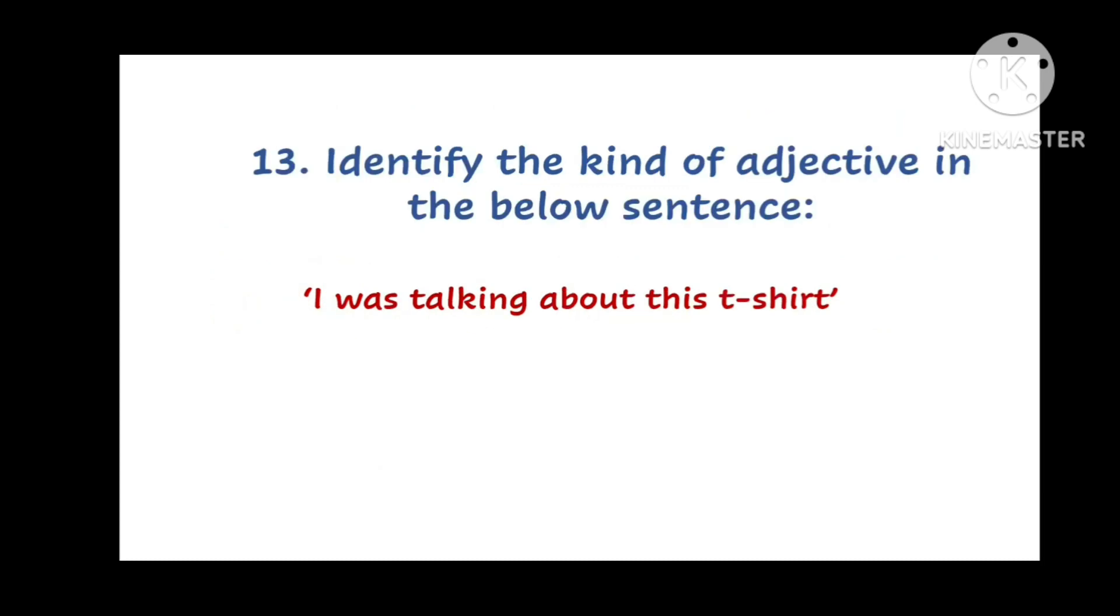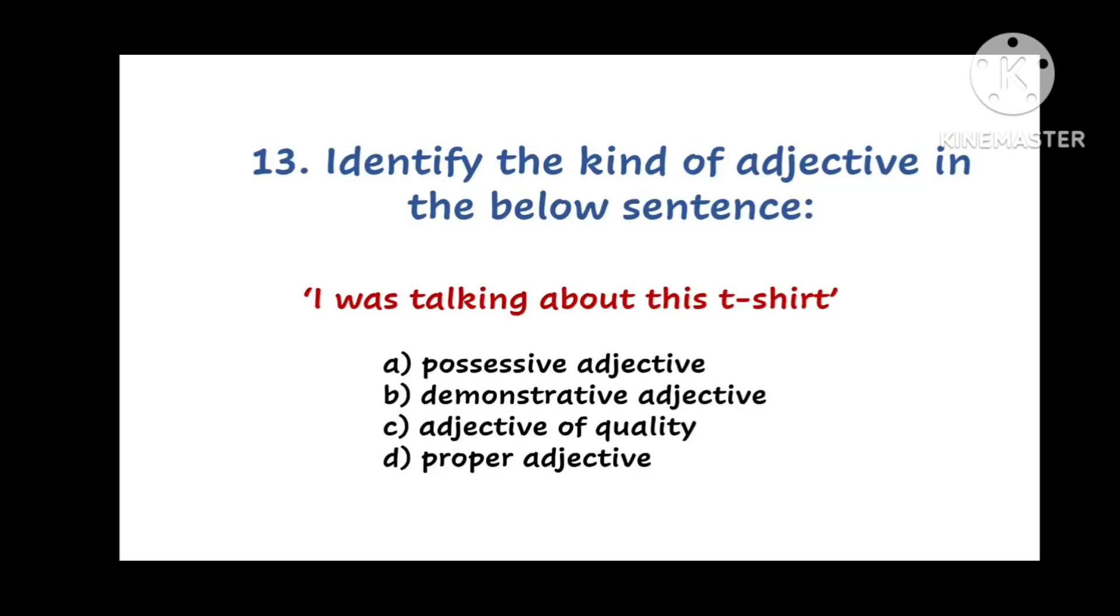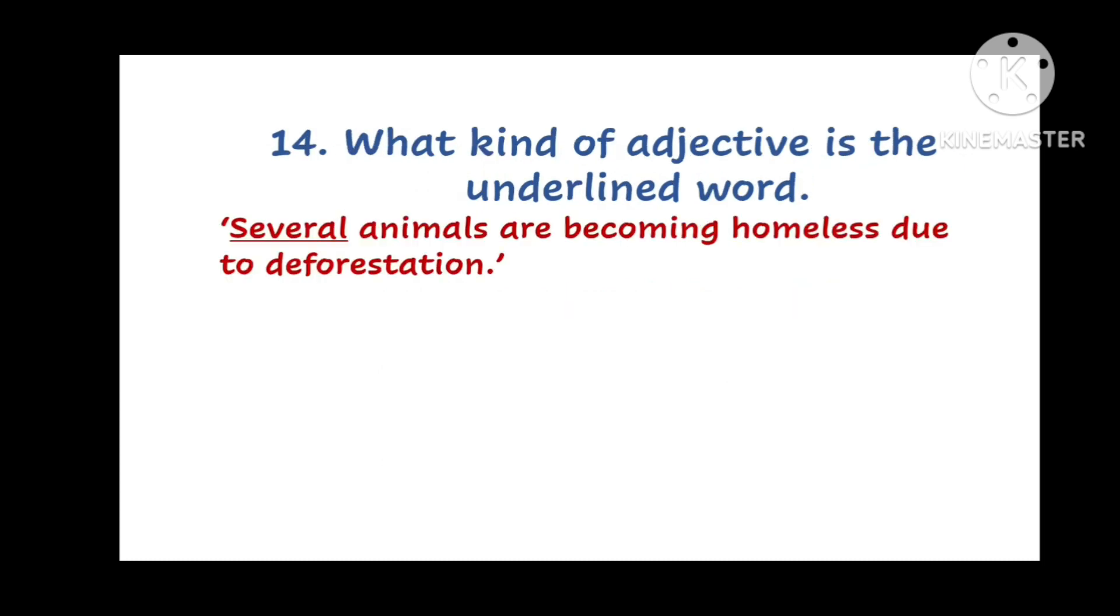Next question. Identify the kind of adjective in the below sentence. You have to find the adjective in the sentence and identify its kind. And the options are A. Possessive adjective. B. Demonstrative adjective. C. Adjective of quality. Or D. Proper adjective.